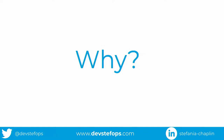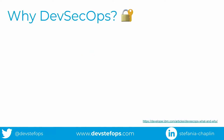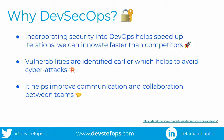So why DevSecOps? Why have you been listening? Incorporating security into DevOps helps speed up iterations — we can innovate faster than competitors. What happens when you innovate faster? You'll probably have a better product for your customers, customers will move from your competitors to you, and you'll gain market share. Second: vulnerabilities are identified earlier, which helps to avoid cyber attacks — especially pertinent with everything going on in the world. And finally: improving communication and collaboration between teams.